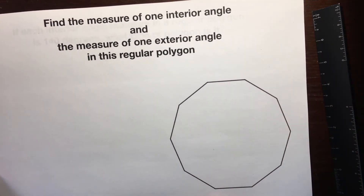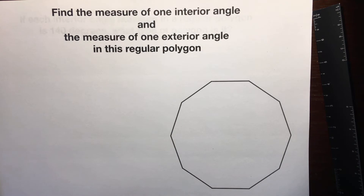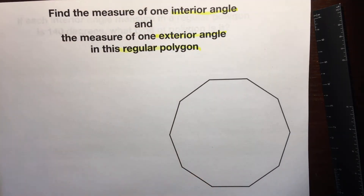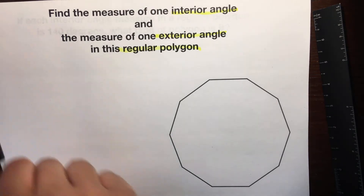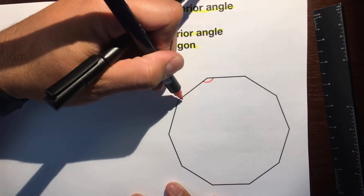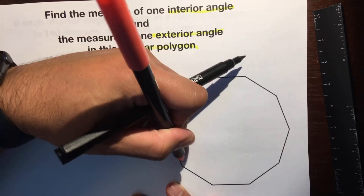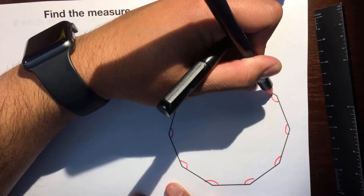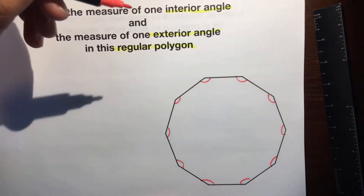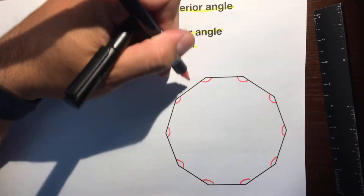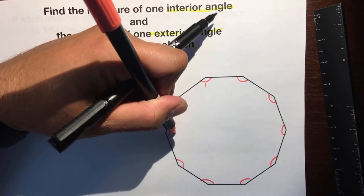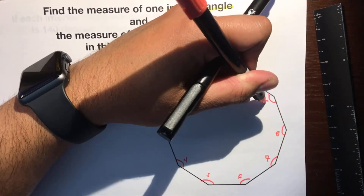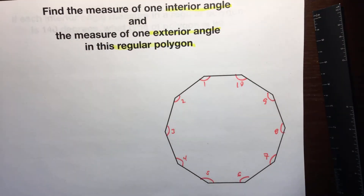Here is example number two: find the measure of one interior angle and one exterior angle in this regular polygon. Let's count the angles: 1, 2, 3, 4, 5, 6, 7, 8, 9, 10. Let's count again to make sure: ten congruent angles. It's a decagon.